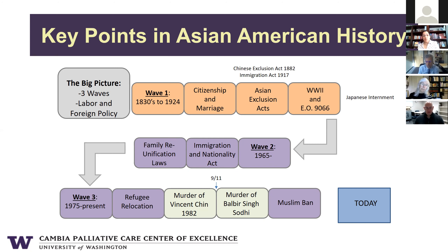That gets us to wave three: the Vietnam War era. Now we have a new segment of the population coming — the relocation of refugees, particularly those from Southeast Asia. I'm then highlighting a couple of acts of anti-Asian racism. You have the murder of Vincent Chin in 1982, a pivotal moment in Asian American history. That's happening as the Japanese auto industry is on the rise. Vincent Chin, who was a Chinese American, was killed by two white men who thought he was Japanese in Detroit, Michigan.